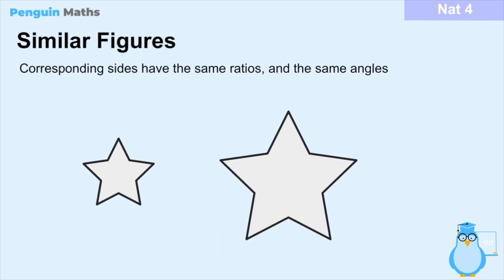Now we look at similar shapes and figures in more detail. Similar shapes have the same ratios, meaning corresponding sides — the sides that have been scaled — have the same ratio of scaling. For example, if we double the length of one side to get the new side, we also have to double the corresponding side. That's what we mean by corresponding sides having the same ratios.